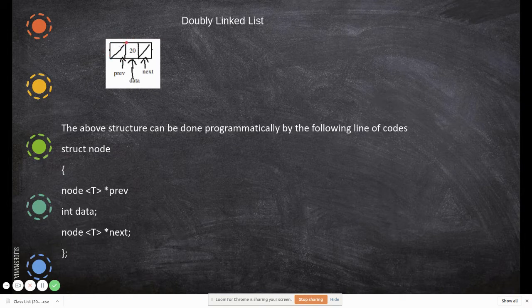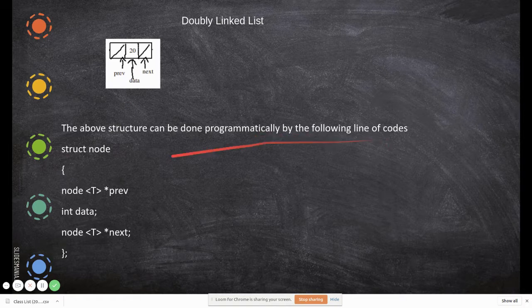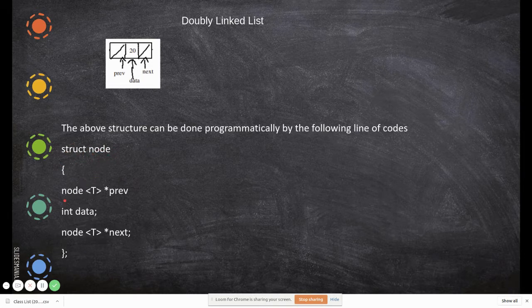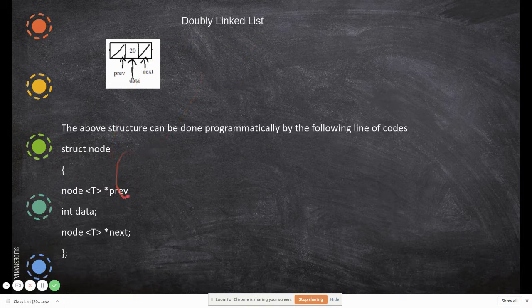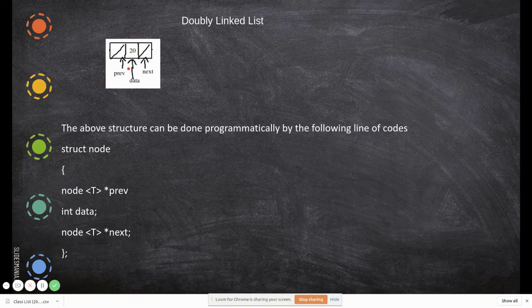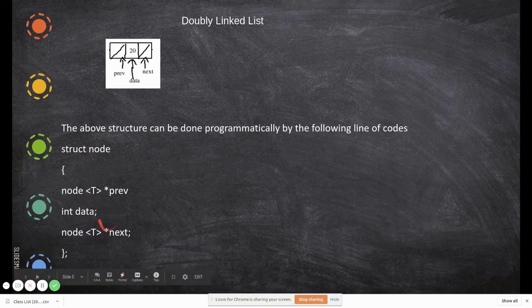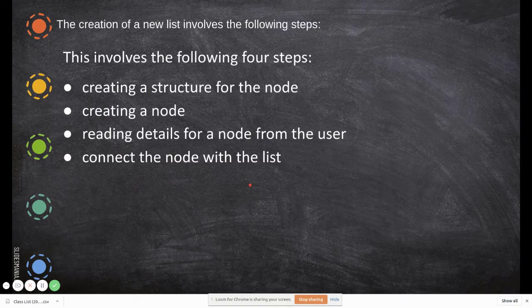Now let us consider the structure to represent the doubly linked list in C++. The node has a previous memory location field, a next memory location field, and a data field. This is represented programmatically as a struct named node. It has two pointers — previous and next — both of type node, since they point to nodes of the same type. A template is used to make it generic so the data field can store any type, whether integer, string, or other.